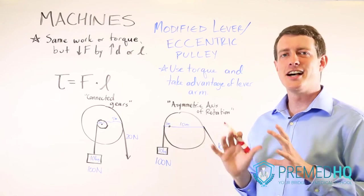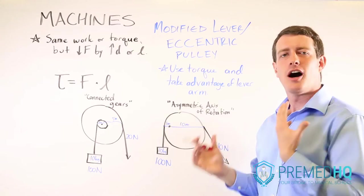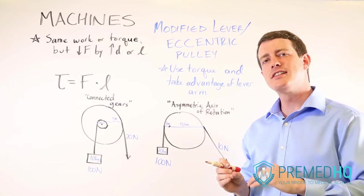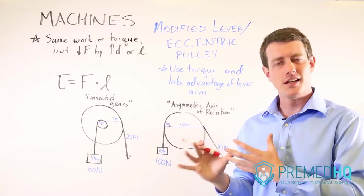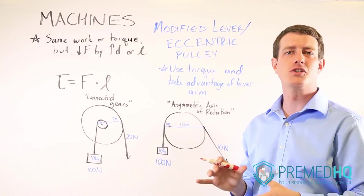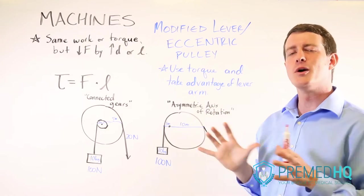So now we move on to a type of machine that looks a lot like a pulley, but actually operates using the principles of a lever. And this is because it takes advantage of a difference in lever arms to perform the same amount of torque, but requiring less force to do so. This is an eccentric pulley or a modified lever.